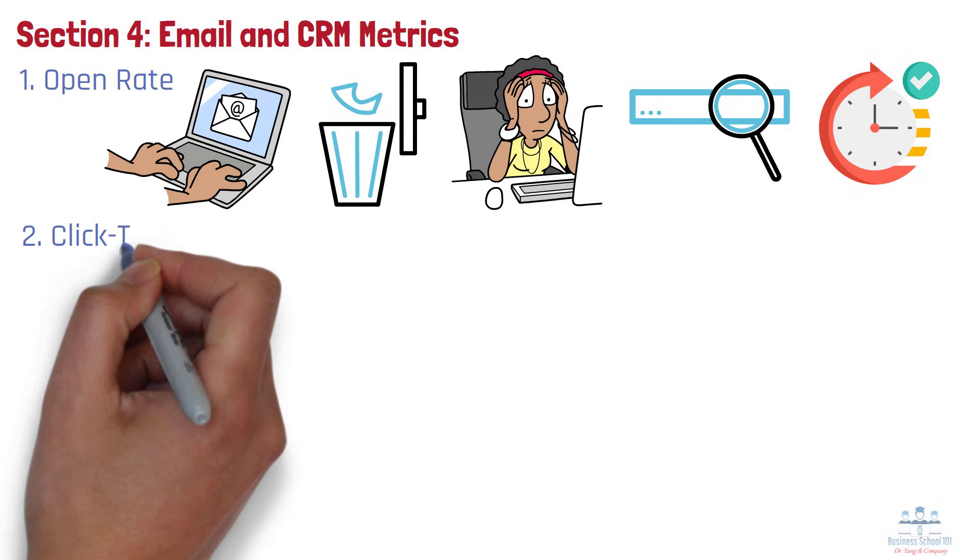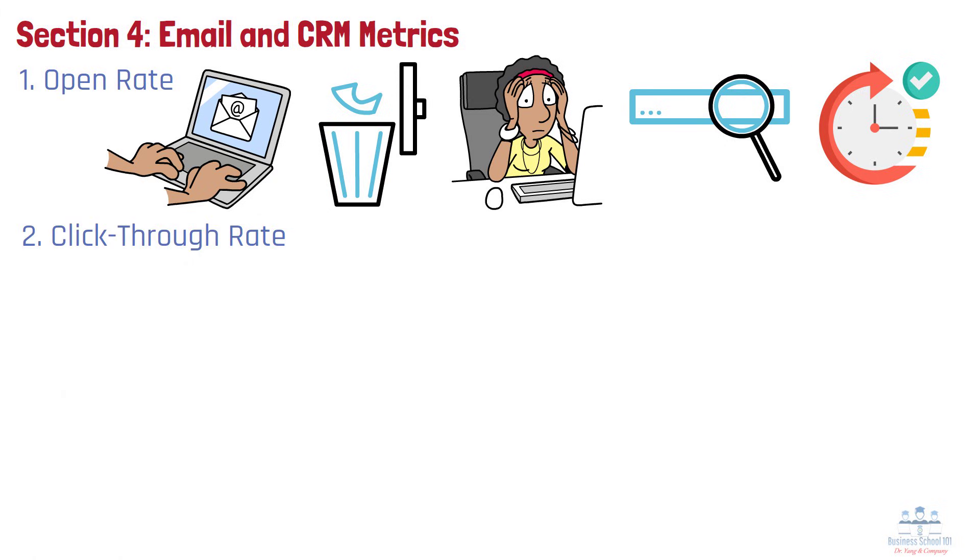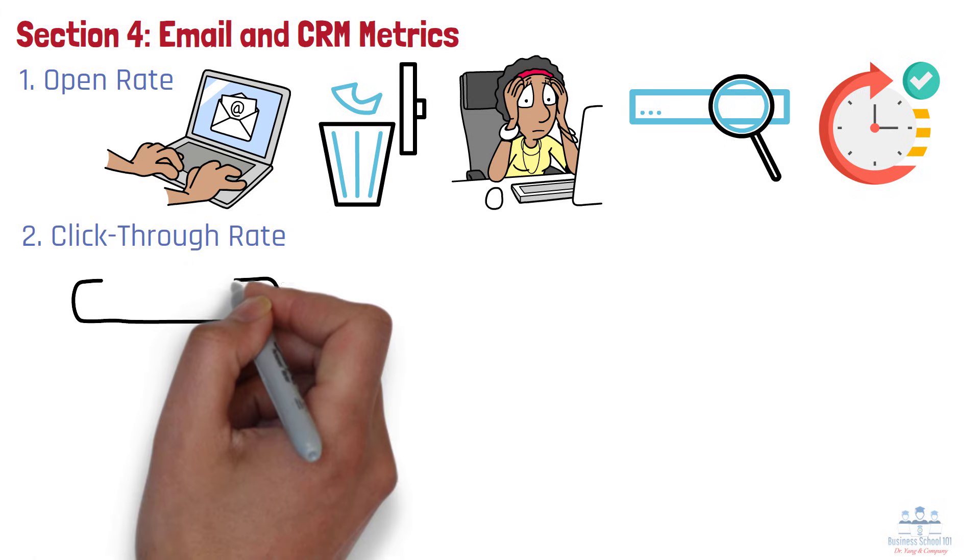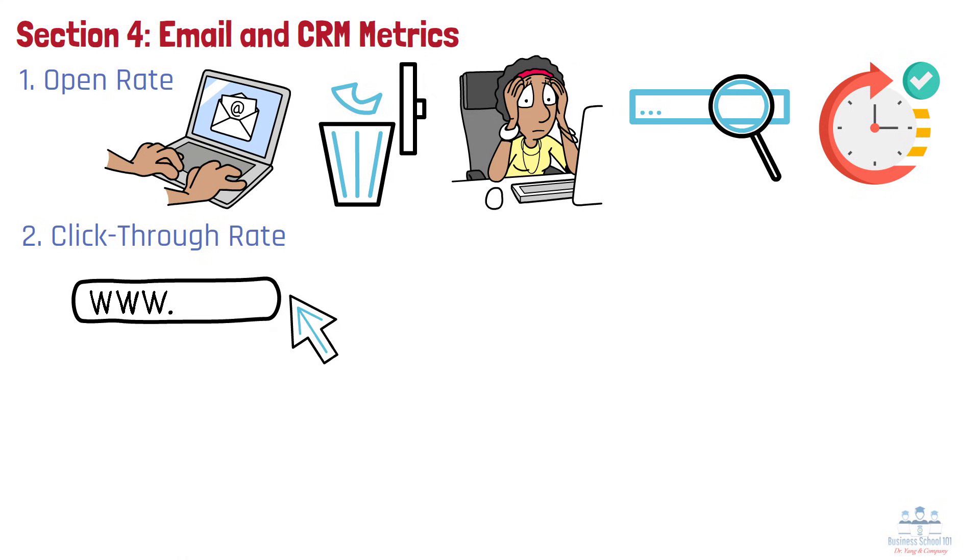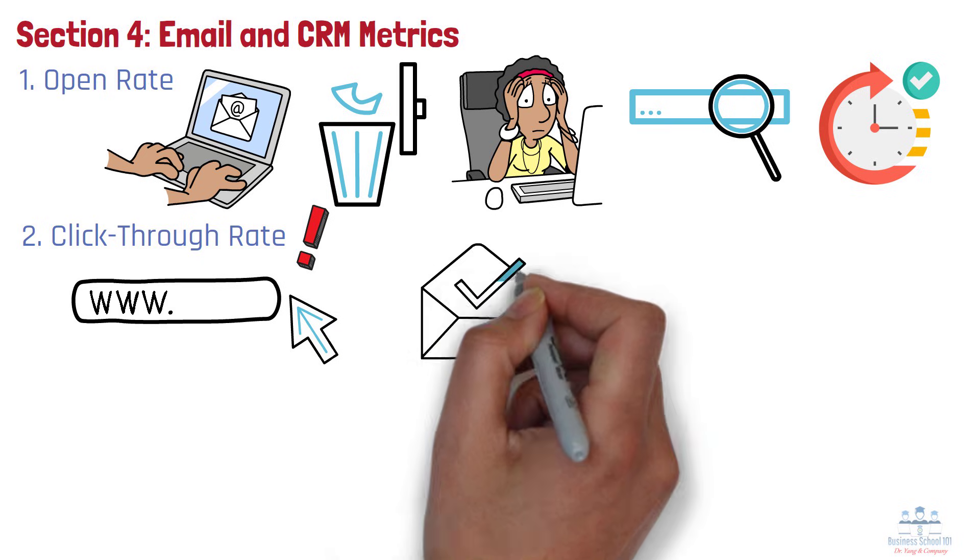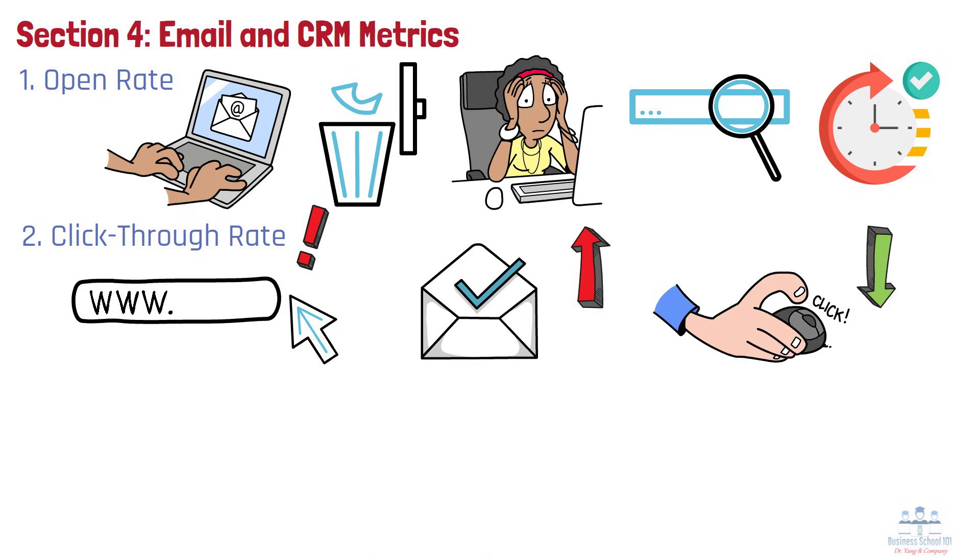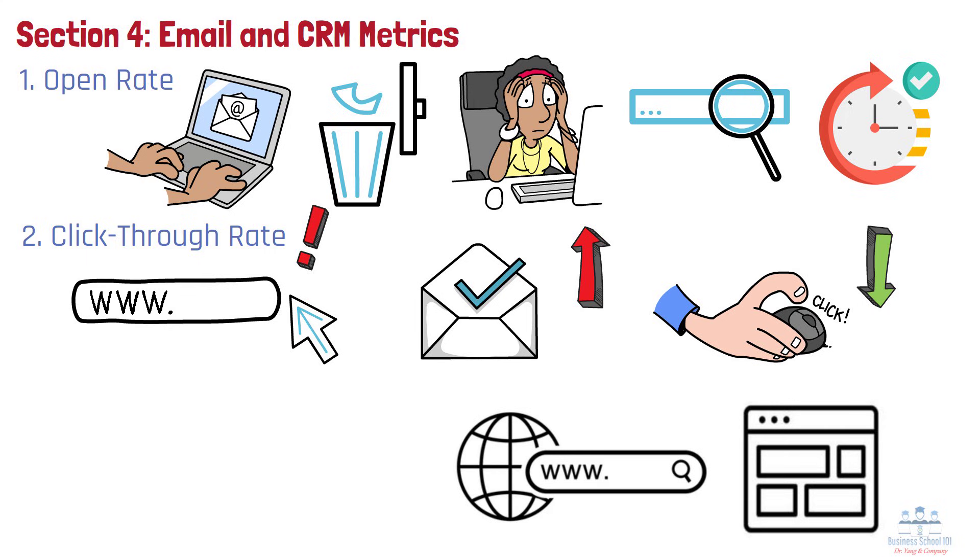Number 2. Click-through Rate. Click-through rate, or CTR, measures how many people clicked on a link within your email after opening it. It's a key indicator of content relevance and call-to-action strength. If your email is opened often but rarely clicked, you may need to adjust your layout, links, or messaging.